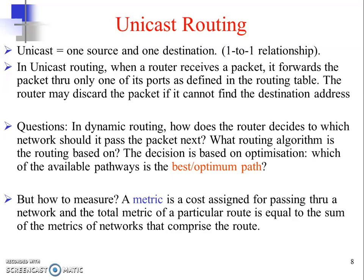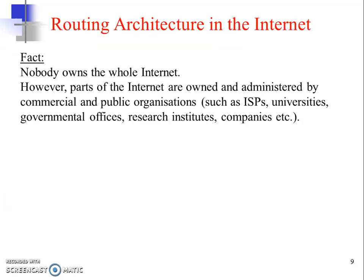The decision of which path to take is made by the router and recorded in the routing table. Before going further, you should know the routing architecture present in the internet. An important fact is that nobody owns the whole internet — parts of the internet are owned and administered by various organizations such as ISPs, government offices, research institutes, companies, and universities.